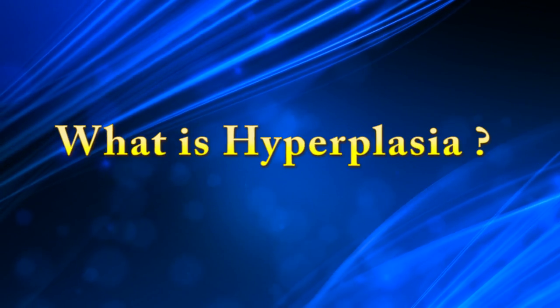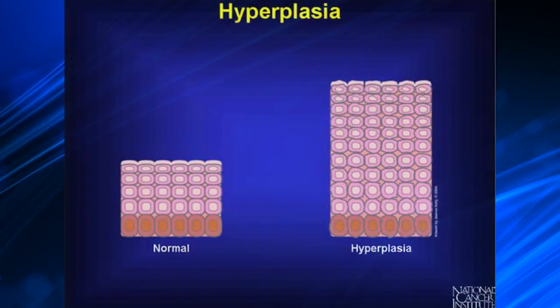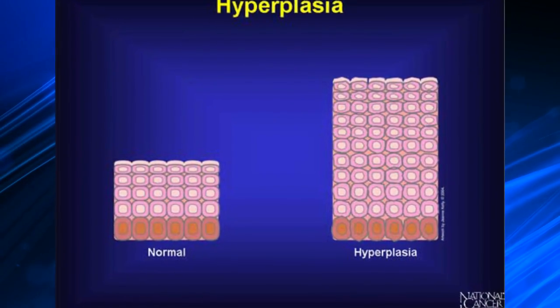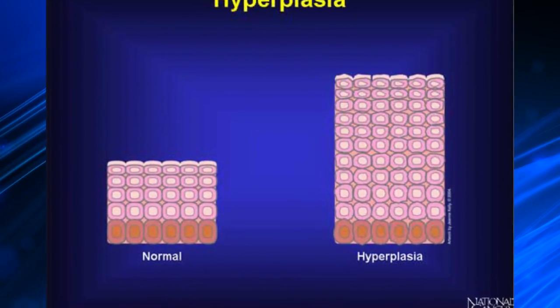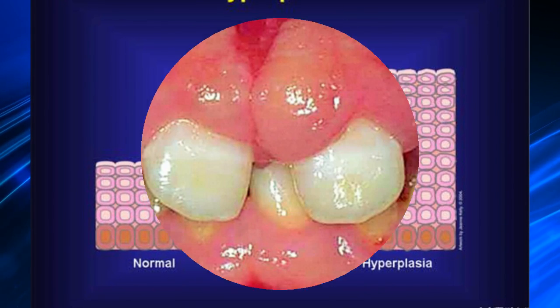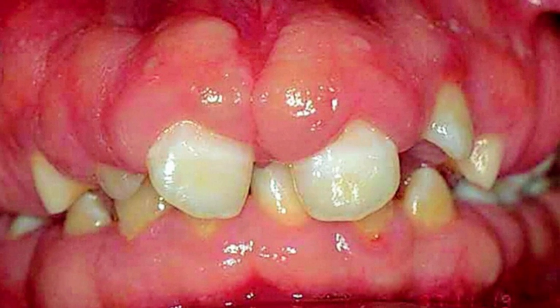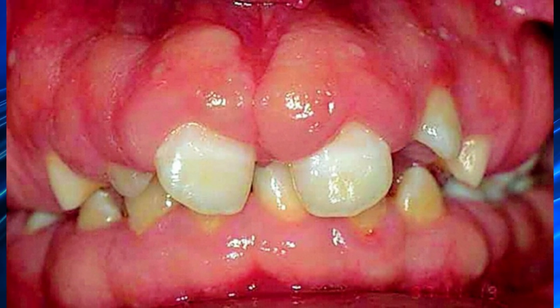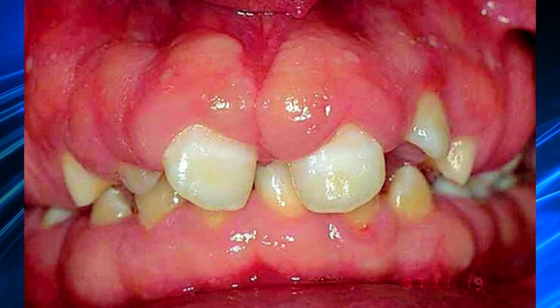What is hyperplasia? Hyperplasia is an increased number of cells in an organ or tissue, usually resulting in increased volume of the organ or tissue.